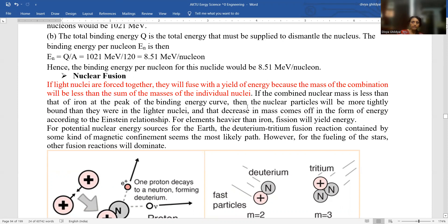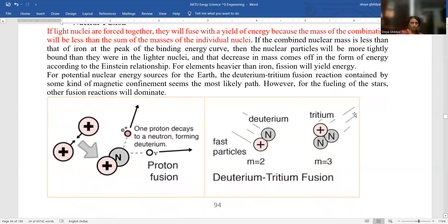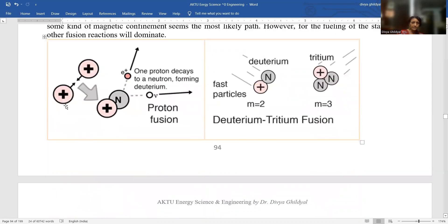If the combined nuclear mass is less than that of iron at the peak of binding energy curve, then the nuclear particles will be more tightly bound than they were in the lighter nuclei. That decrease in mass comes off in the form of energy according to Einstein's equation. You can see here they are combining and the remaining energy is coming out.